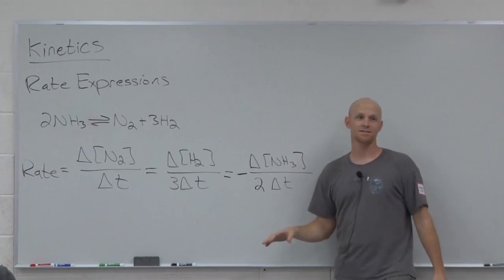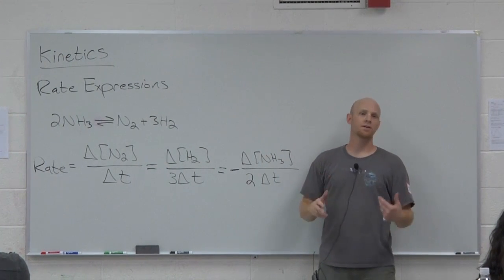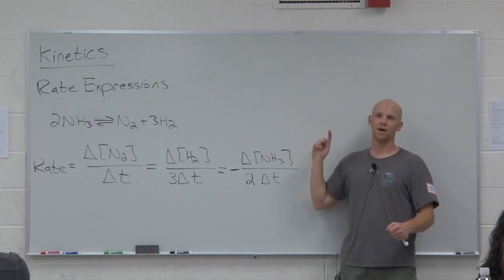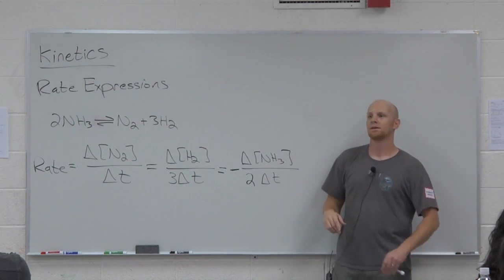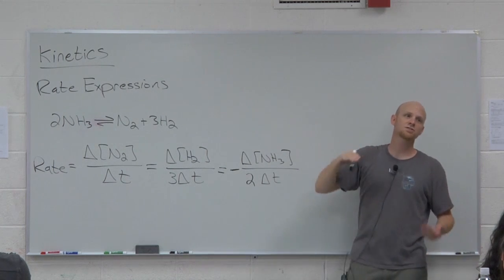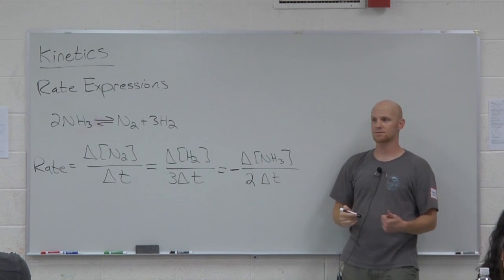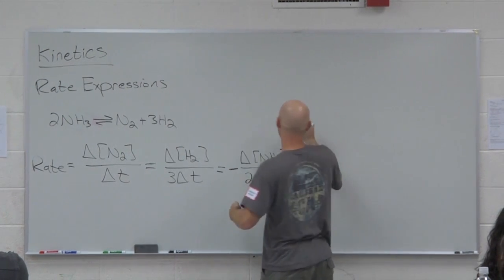So these are valid rate expressions. You may get a question on the exam that just says, for this reaction, which of the following is a valid rate expression? And any one of these three could be the correct answer. Or they might put all three and then put choice D as all the above, right? Cool. The other kind of question you might see with this, though, is just comparing actual numerical rates of different reactants and products in the same reaction.